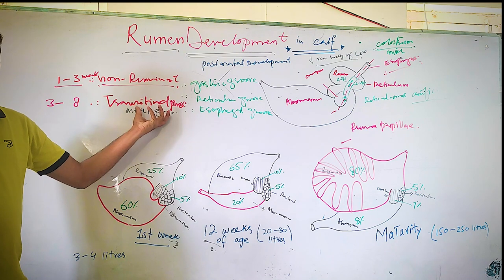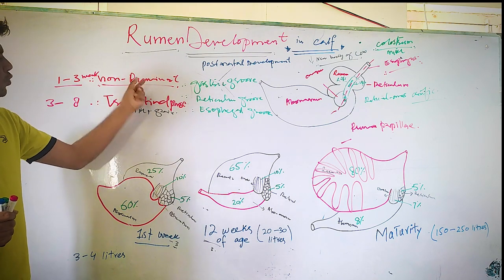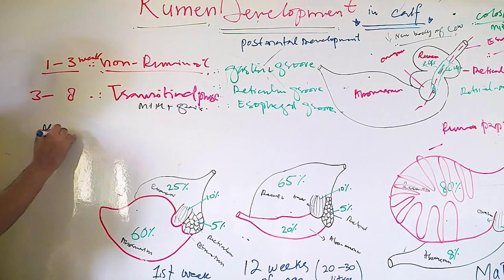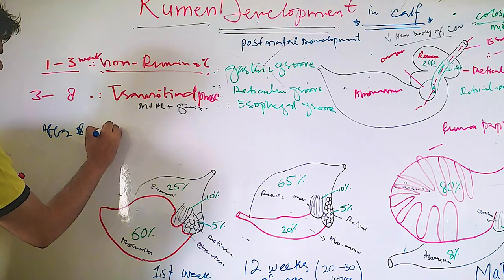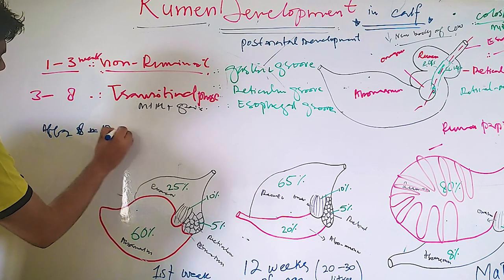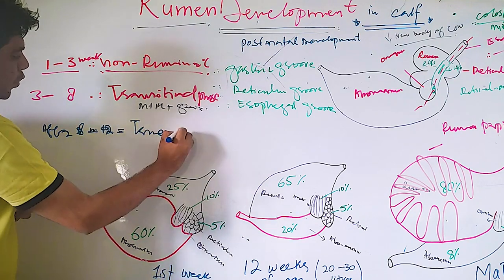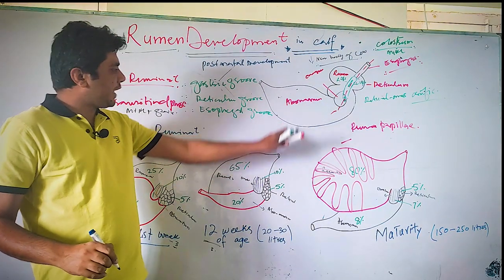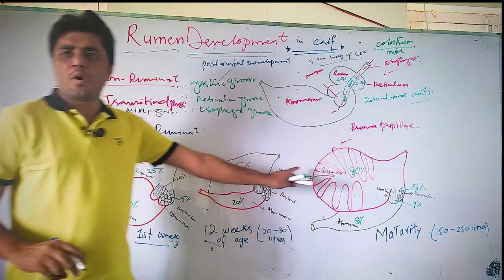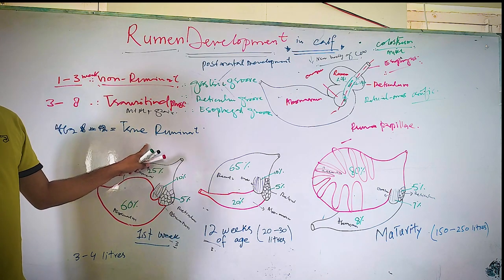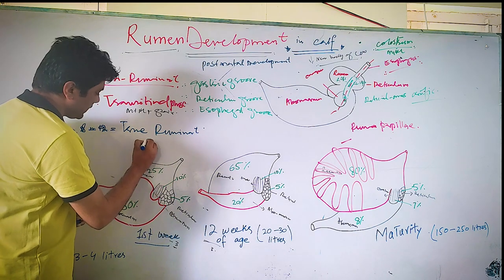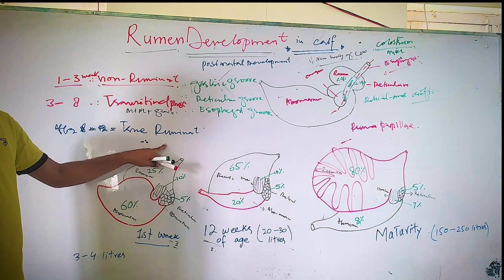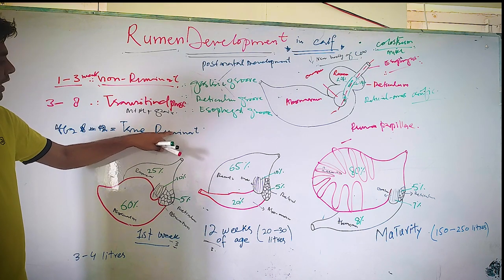This phase is known as the transitional phase — from non-ruminant toward ruminant. After eight to twelve weeks, the third phase is known as the true ruminant. Your rumen or your calf is fully developed now. At that stage, you can give what rumen actually digests most — forages and grass. You can start that food which needs the rumen to digest.